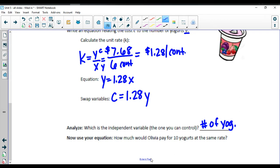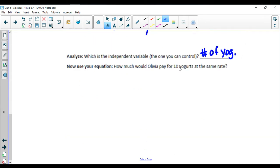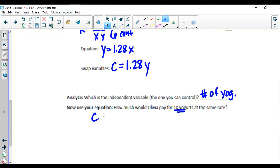So the last part here, we're going to use our equation. How much would Olivia pay for 10 yogurts at the same rate? Our cost is equal to $1.28 times the number of yogurts we buy. Olivia is going to buy 10 yogurts. So we're going to do $1.28 times 10. Our cost is going to be $12.80 by multiplying those two numbers together.